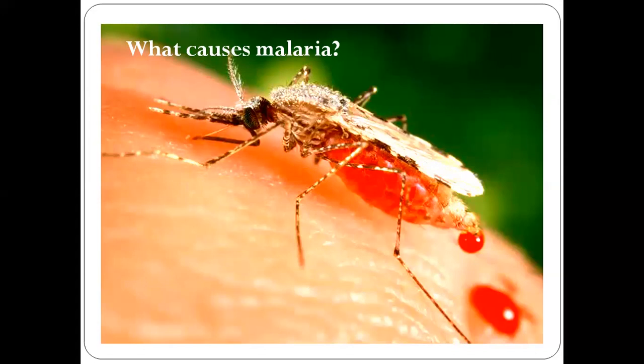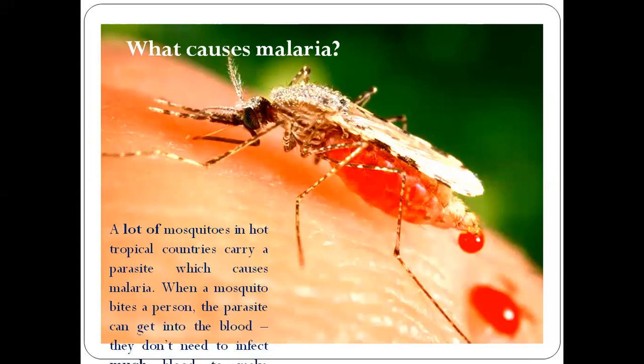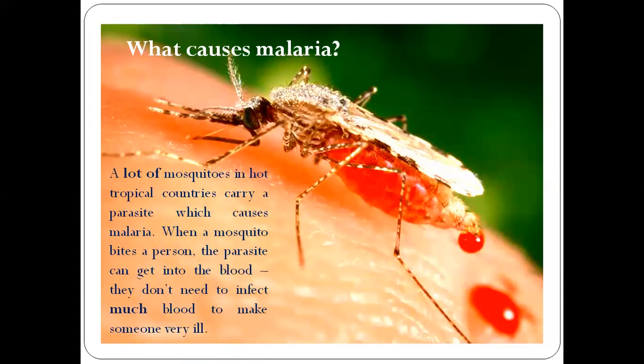Let's learn about it. What causes malaria? See, information is coming. Let me read for you. A lot of mosquitoes in hot tropical countries carry a parasite which causes malaria. When a mosquito bites a person, the parasite can get into the blood. You can see in the picture. They don't need to infect much blood to make someone very ill. A small bite is enough for the infection.